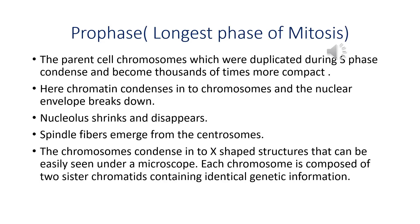Prophase is the longest phase of mitosis. Here the parent cell chromosomes, which were duplicated during the S phase, become thousands of times more compact. Remember that in the cell cycle there are interphase and the mitosis phase — interphase was the longest phase and mitosis is the shortest. In the interphase there are different phases G1, S, and G2. The S phase is the DNA synthesis phase, so during S phase the parent cell chromosomes are already duplicated and they become thousands of times more compact in the prophase stage.